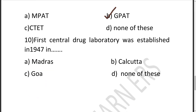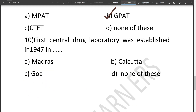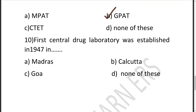The tenth and last question: The first central drug laboratory was established in 1947 in dash. You can see from the first chapter which was the first pharmacopoeia edition and which was the first laboratory. Option A is Madras, B is Calcutta, C is Goa, D is None of these.